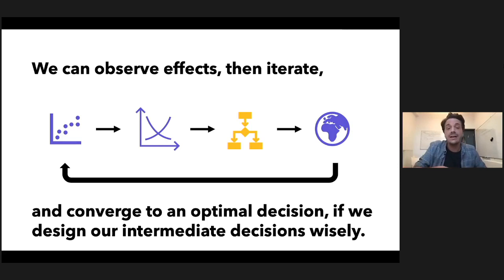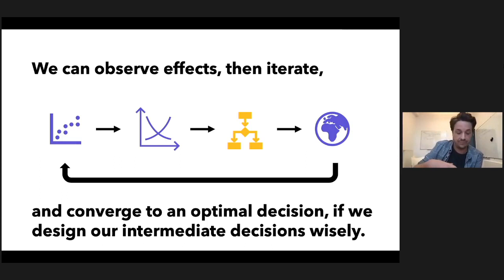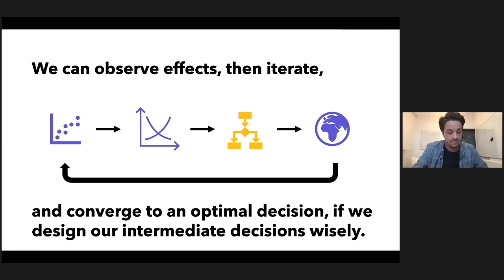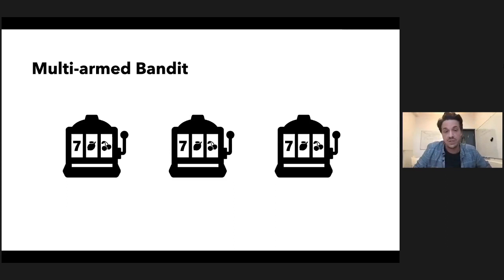Why does our ability to converge to optimal decision-making depend on decisions in the short term? Well, to reliably identify an optimal decision, we have to act in a way that lets us infer the value of all decisions that could be optimal. Following what we believe to be the most profitable decision in the short term won't always grant us the information we need to learn the best decision in the future. There's a complex balance to strike between experimenting enough to gain information and making decisions that pursue profit. To understand this trade-off better, we're going to consider a class of models called multi-armed bandits.